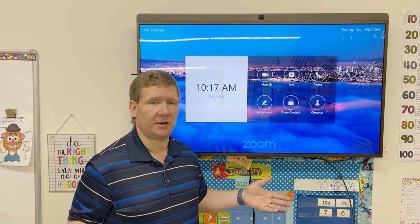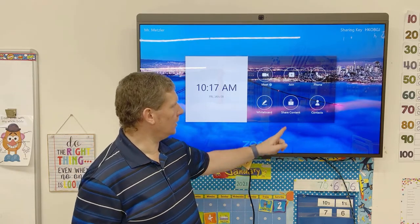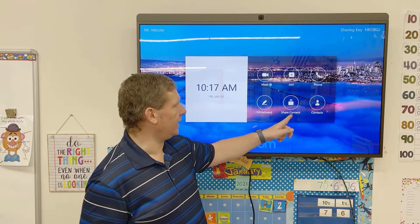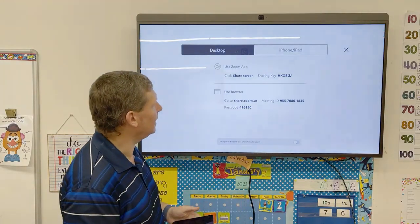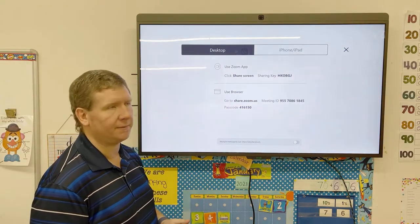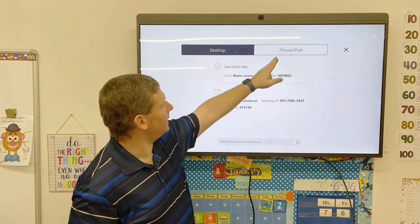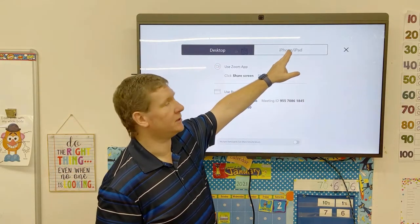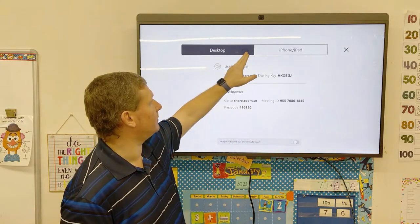So let's say you just want to share your screen with people in your room. You'll see a Share Content button right here, and you tap on that. It's going to pop up with these two options. You're going to see Desktop, and you're going to see iPhone, iPad. Just touch the tab to switch back and forth between the two.